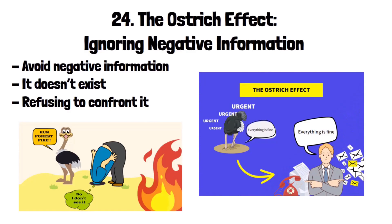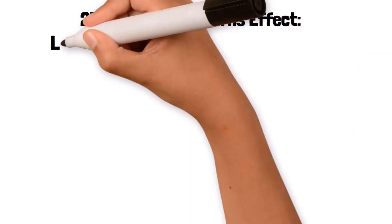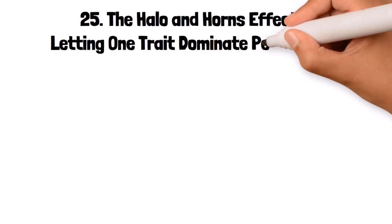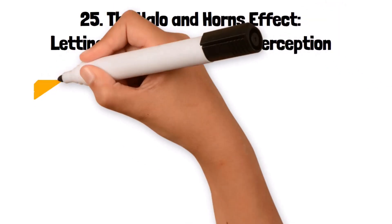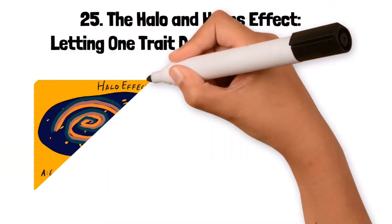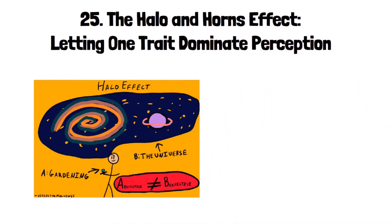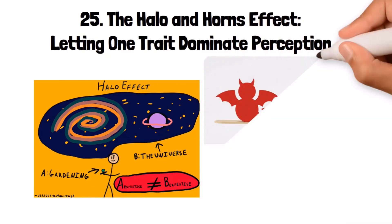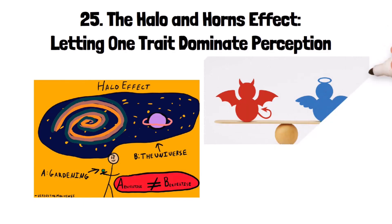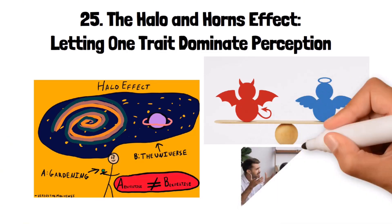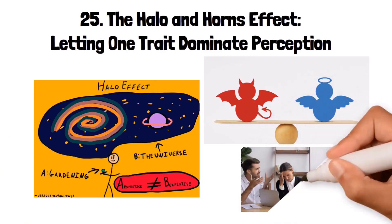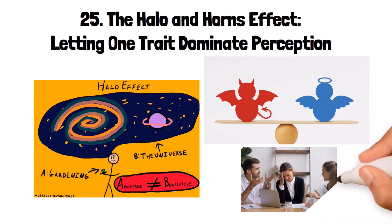25. The Halo and Horns Effect: letting one trait dominate perception. The horns effect is the opposite of the halo effect, where a single negative trait overshadows all other qualities, leading to an overall negative perception. If someone perceives a person or product as having one bad quality, they might assume other qualities are also bad. For example, if a manager perceives an employee as lazy because of one incident, they might overlook the employee's other positive qualities, such as creativity or teamwork skills.